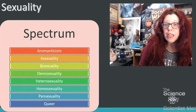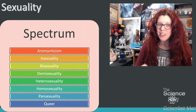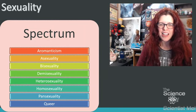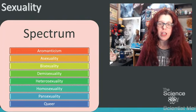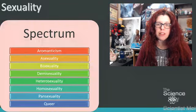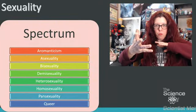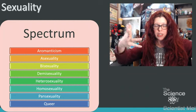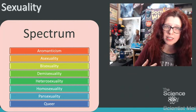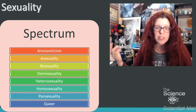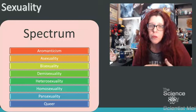So what are the different types of sexuality? We have a chart right here. These terms include: aromanticism, asexuality, bisexuality, demisexuality, heterosexuality, homosexuality, pansexuality, and queer.